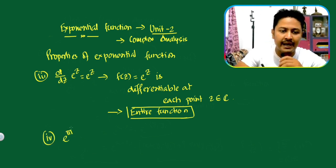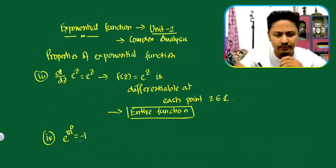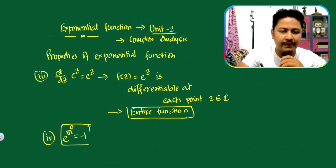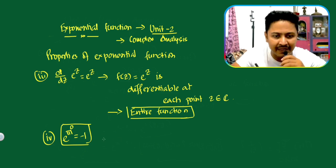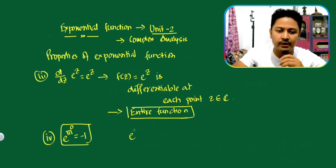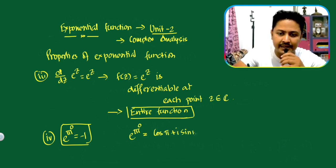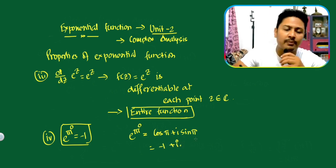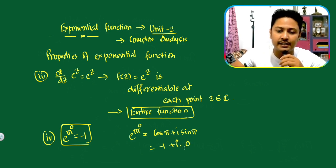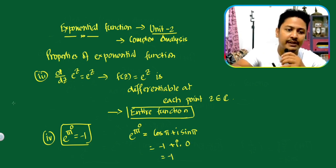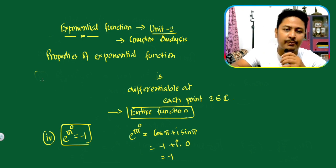Next property: e to the power pi i equals minus 1. Using Euler's theorem, e to the power pi i equals cos pi plus iota sin pi. cos pi equals minus 1, and sin pi equals 0 — since an even multiple of pi gives 0 — so the value is minus 1. This is the next property.